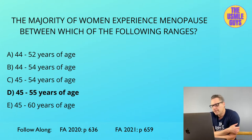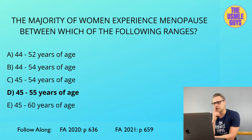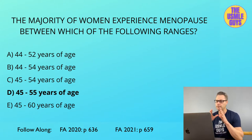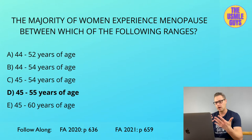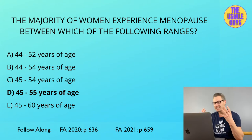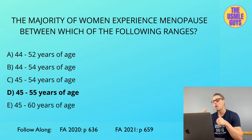A very small percentage of women, right around 1%, may experience menopause before 40 years of age. If it happens between 41 and 45 years of age, we call this early menopause. On a large scale, the cause of menopause is the cessation of estrogen production from the ovaries.